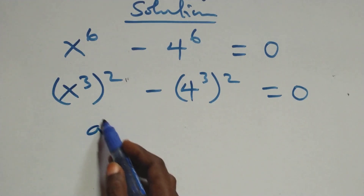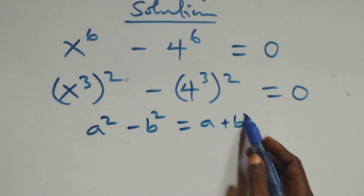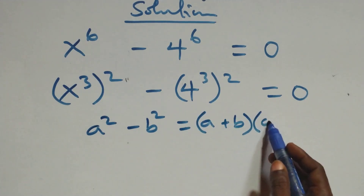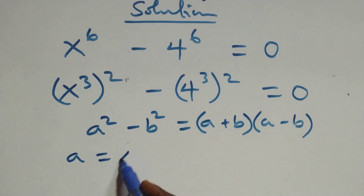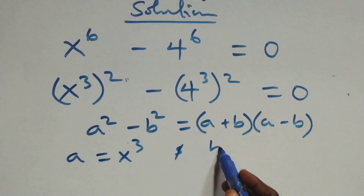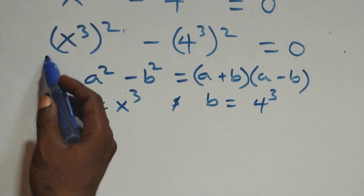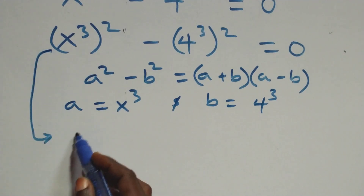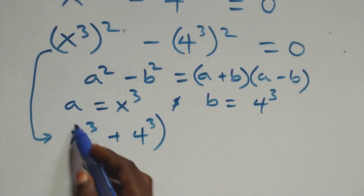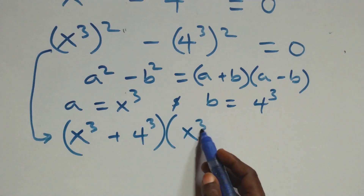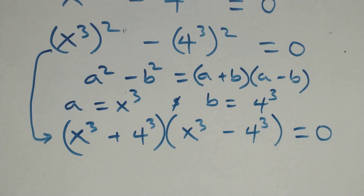This follows the form a squared minus b squared, which factors as a plus b times a minus b. Here, a stands for x raised to power 3 and b stands for 4 raised to power 3. So all we have becomes x raised to power 3 plus 4 raised to power 3, times x raised to power 3 minus 4 raised to power 3, equals 0.